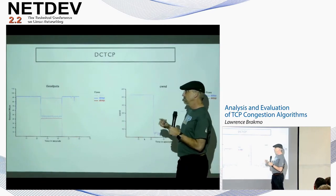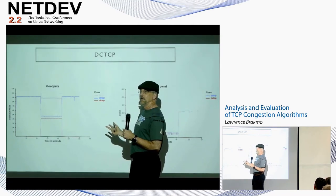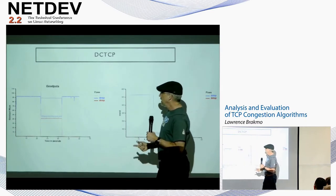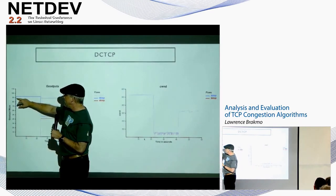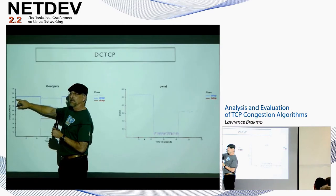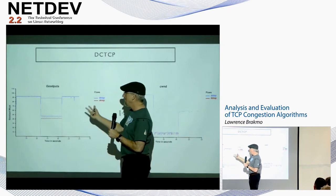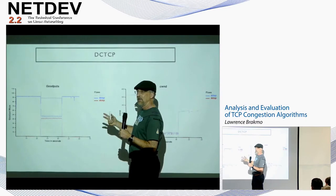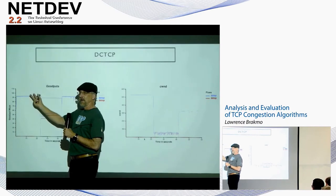DCTCP very quickly converges to be fair, and when the other flow starts, it very quickly goes back up. However, in my environment I'm getting losses with DCTCP — in this experiment with only one flow, I'm retransmitting 7,000 packets within the first 200 milliseconds as a result of slow start. There shouldn't be congestion since all links are the same 10 gigabits per second bandwidth, but DCTCP is retransmitting 7,000 packets initially.